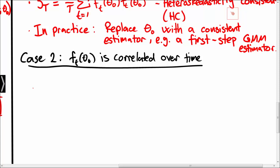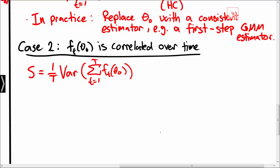Again we start with S, which is 1 over T times the variance of the sum of the Ft's. When the Ft's are correlated over time, all the covariances enter the expression for the covariance matrix S. In general we have 1 over T and the sum from t equals 1 to T and the sum from s equals 1 to T of the expectation of Ft times Fs prime.